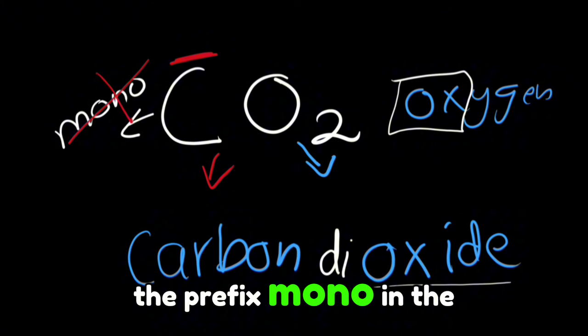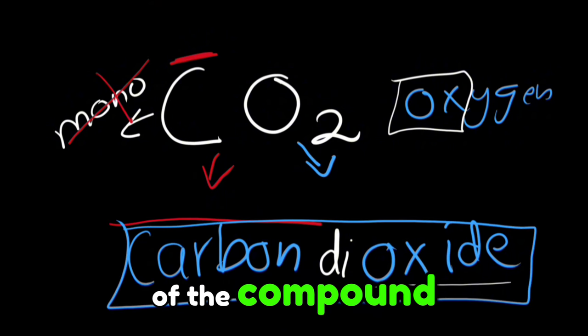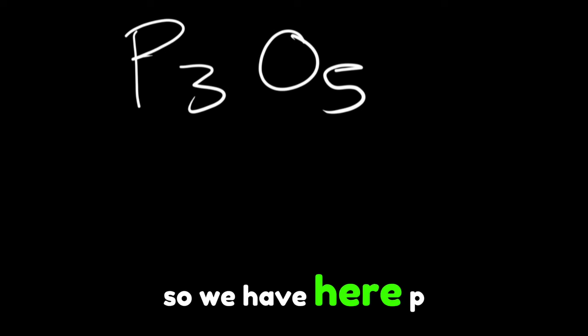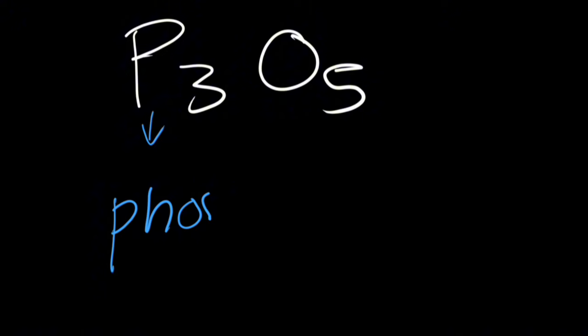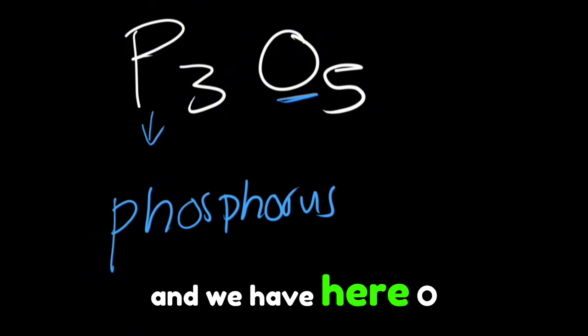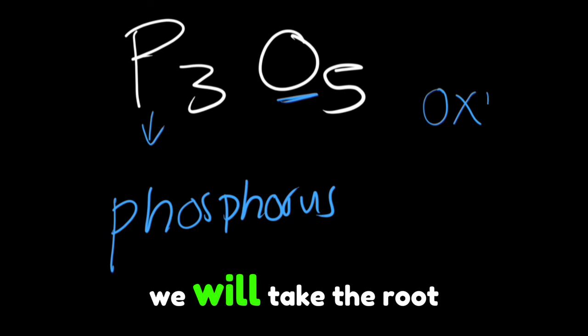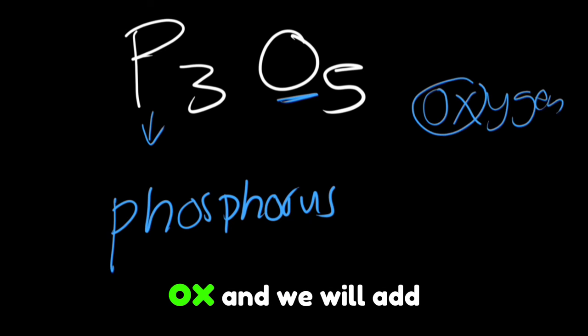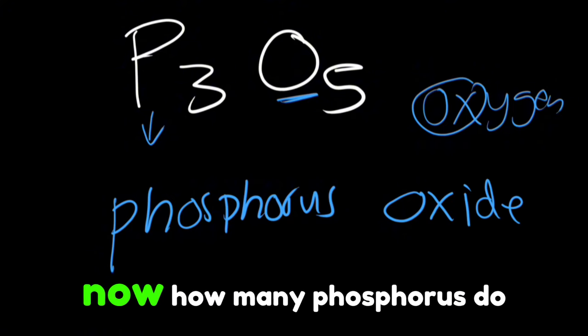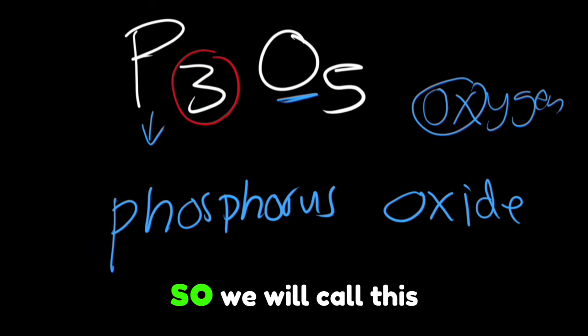Let's try this one. We have P, which is phosphorus, so we name it phosphorus. We have O, which is oxygen. We take the root ox and add ide to make oxide. How many phosphorus do we have? We have three phosphorus, so we call this triphosphorus.